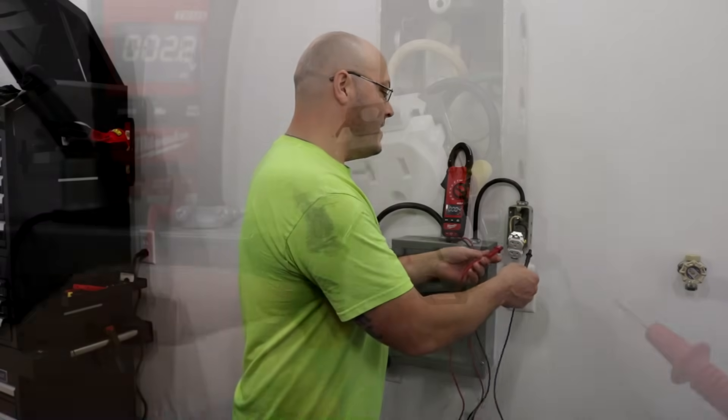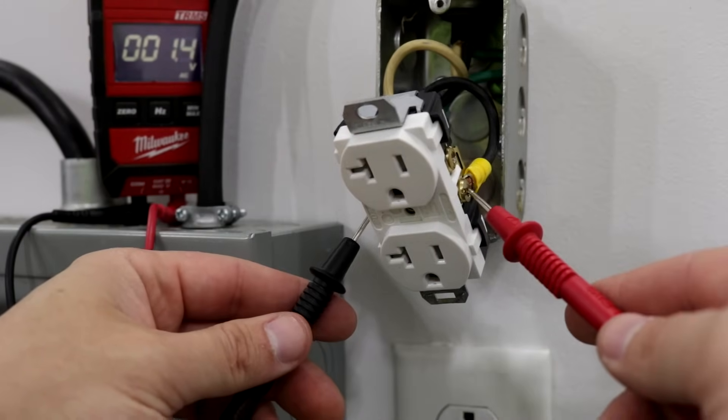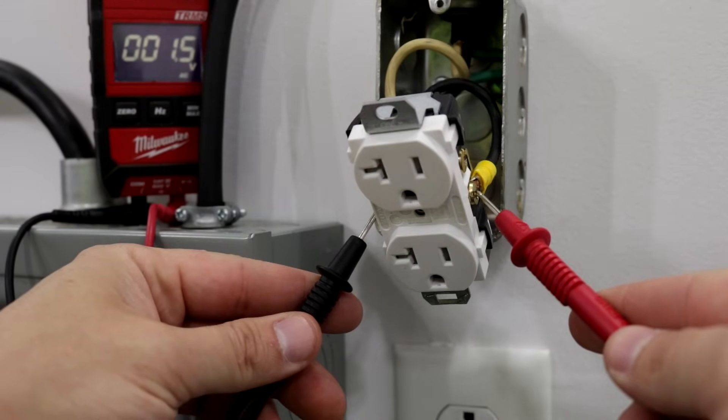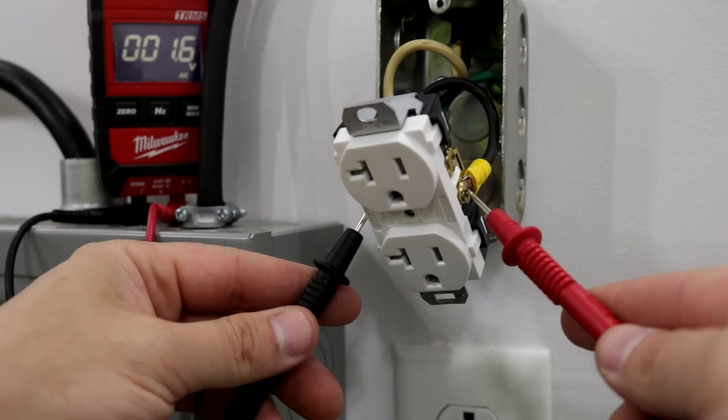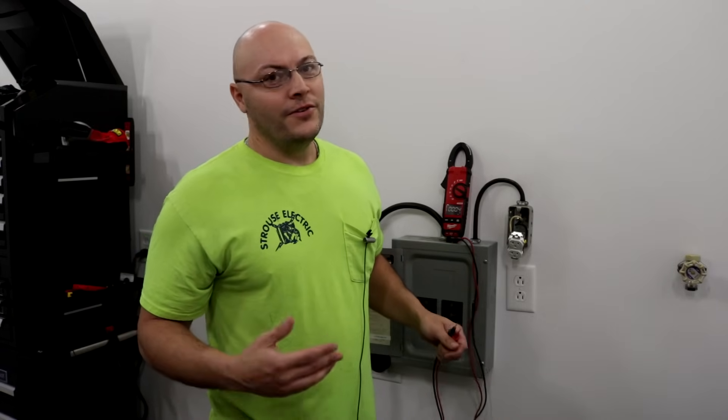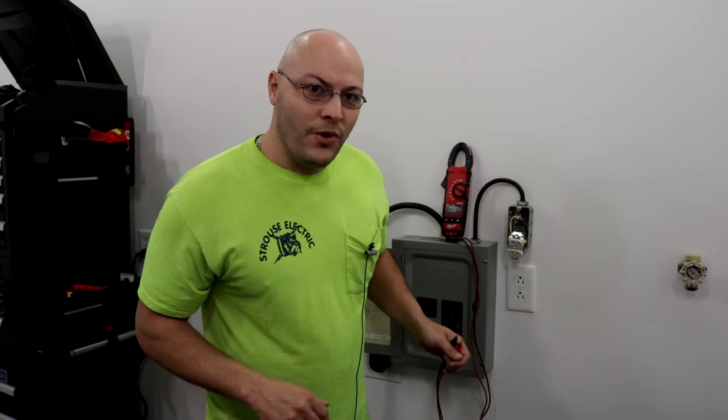But if you check this and you do not have power at these wires, then you've got a bad breaker or you have bad wiring to the outlet. And we'll get into that in the next video. So I'm pretty much going to end this one right here. So I want to thank you guys for watching. If you have any comments or any questions or anything like that, leave them in the comment section. If you're not subscribed to my channel, go ahead and do that now. And thanks for watching.